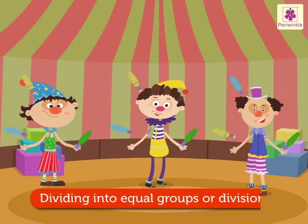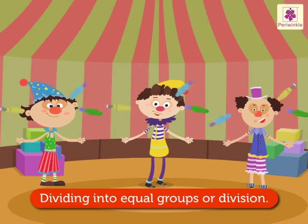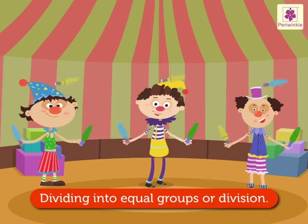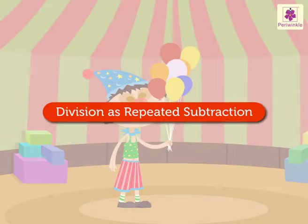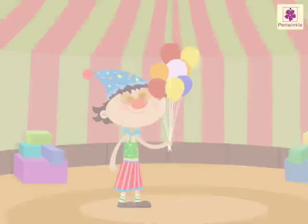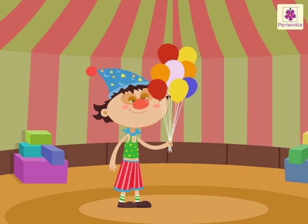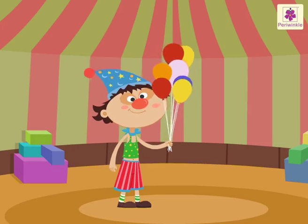This is called dividing into equal groups, or division. Do you know division is actually repeated subtraction? Let's see how with Jojo, the clown.